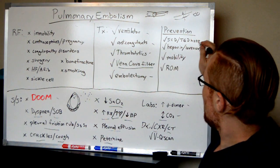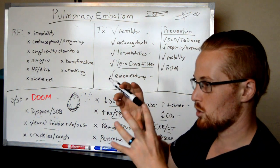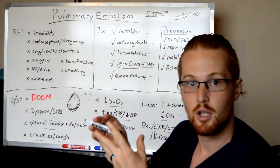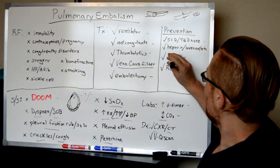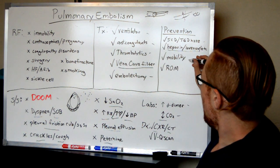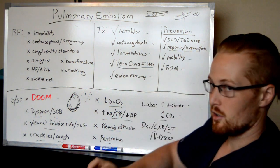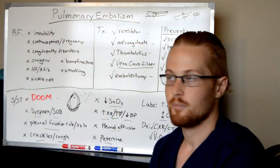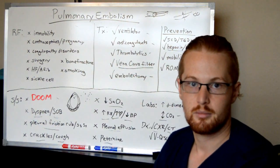For prevention: SCDs and TED hose are used to keep blood flowing through the legs, because blood that doesn't flow clots. Anticoagulants are also used, and just making sure the patient has range of motion, that they're ambulating, and getting that blood pumping. So this is pulmonary embolism.